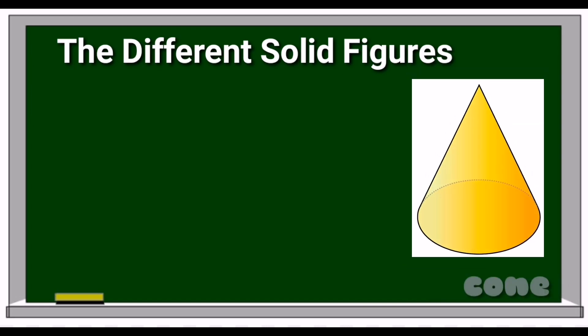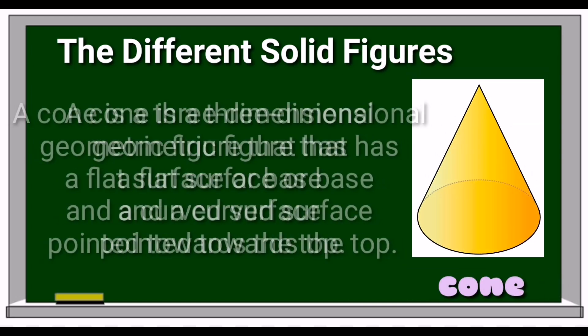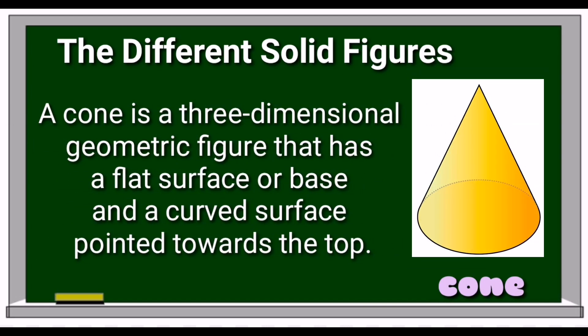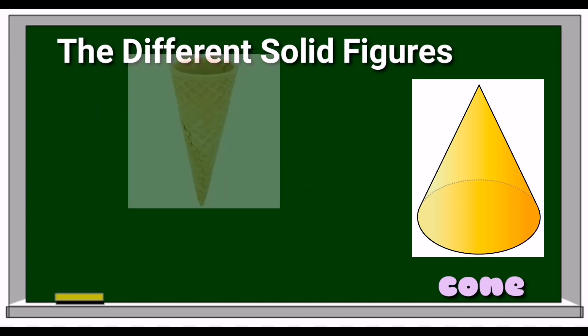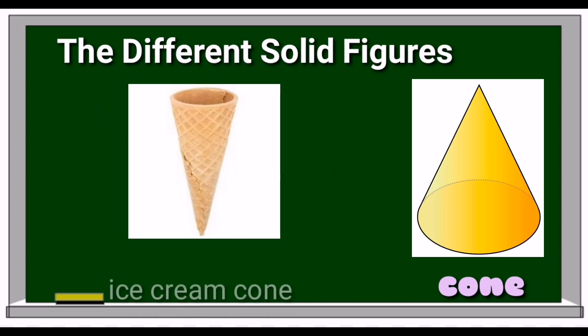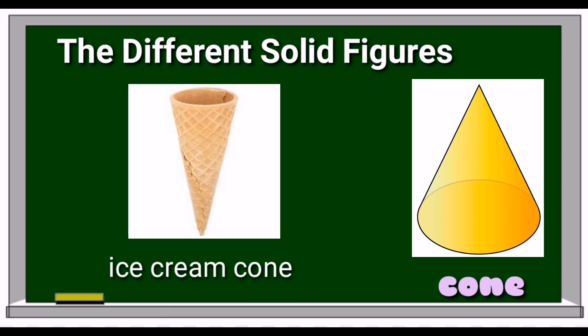The second solid figure is cone. A cone is a three-dimensional geometric figure that has a flat base and a curved surface pointed towards the top. An example of an object that resembles this figure is an ice cream cone.